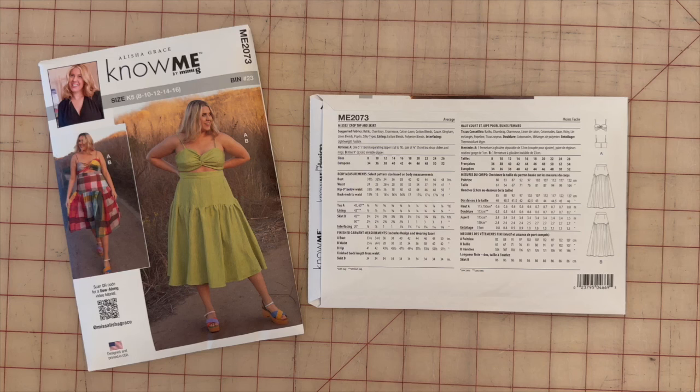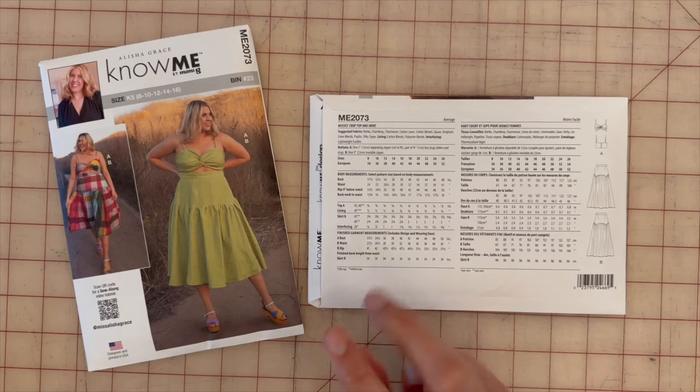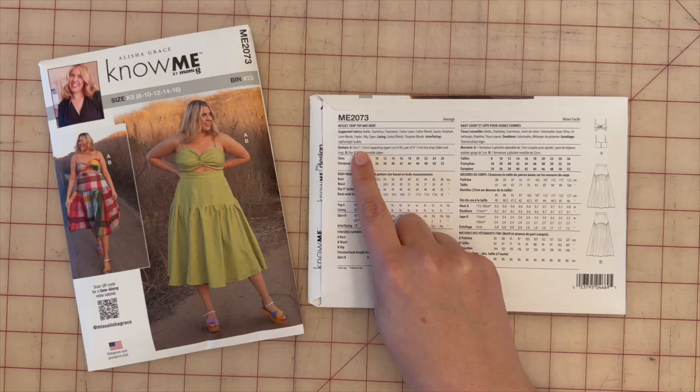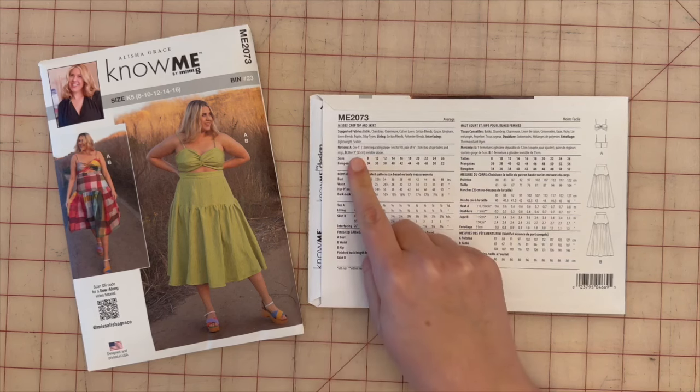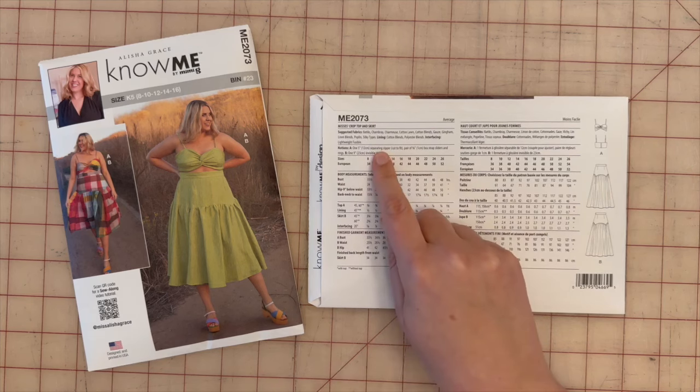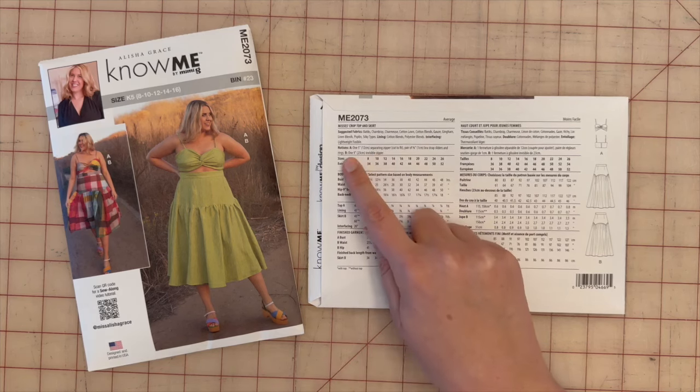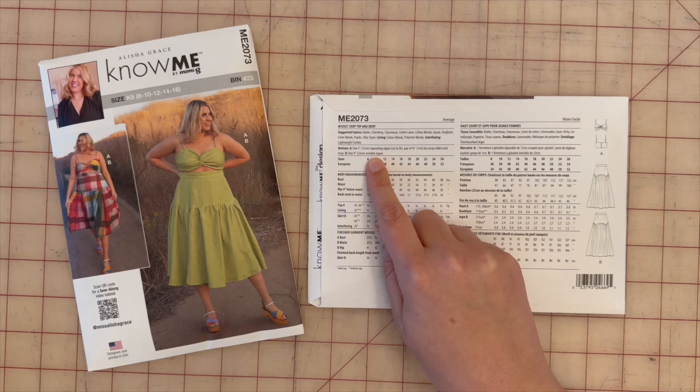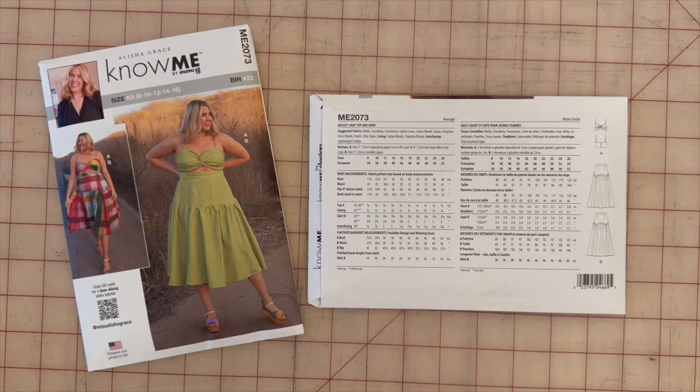This pattern also calls for lightweight fusible facing as well as two zippers. One 5 inch for view A and one 9 inch for the skirt in view B. The 5 inch zipper is a separating zipper and the 9 inch zipper is an invisible zipper. This pattern also calls for one pair of bra strap sliders and rings.